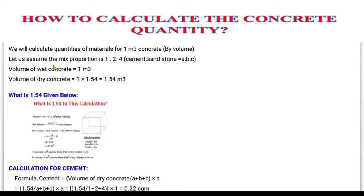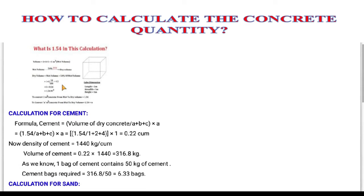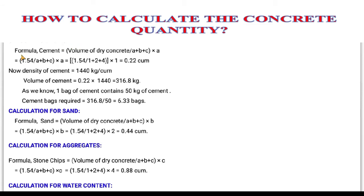First, we will do the conversion of wet concrete into dry concrete. We use the factor 1.54, which we multiply with the volume of wet concrete to convert it into dry concrete, giving us 1.54 cubic meters of dry concrete. The factor 1.54 represents a 54% volume increase from wet volume to dry volume.